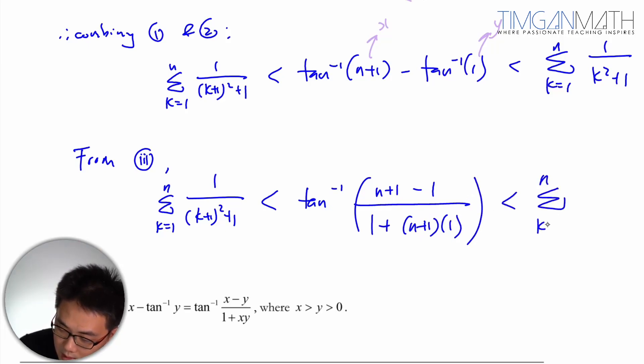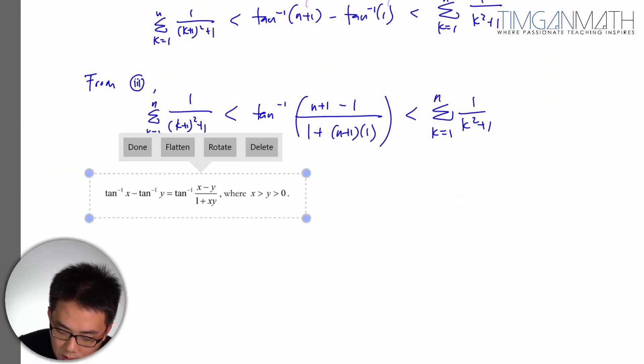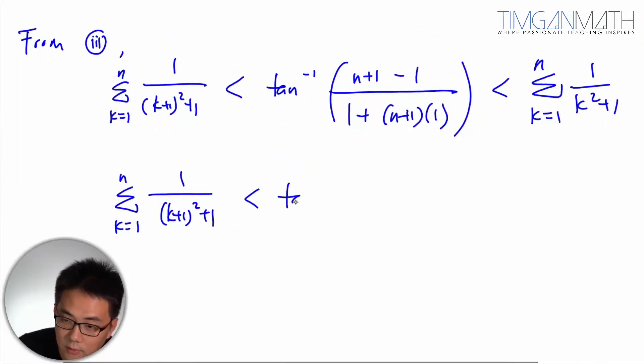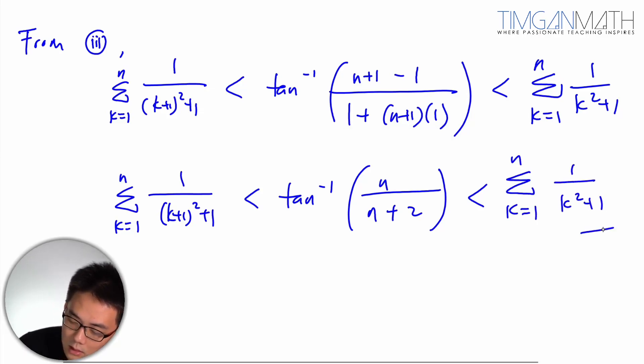I think once this is done, it's pretty straightforward. So we're just going to rearrange this and this will be summation k equals to 1 to n, k plus 1 squared plus 1 between tangent inverse n over n squared plus 2. That's a good thing about proving. So just check. There you go, this is proven.